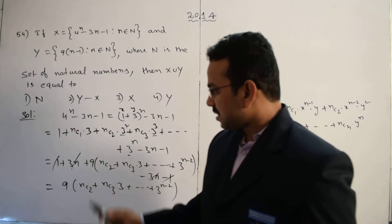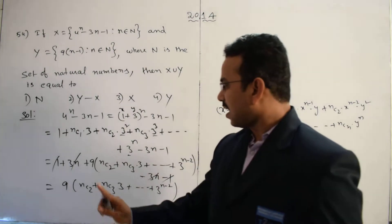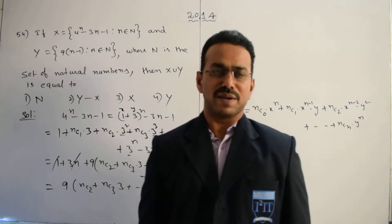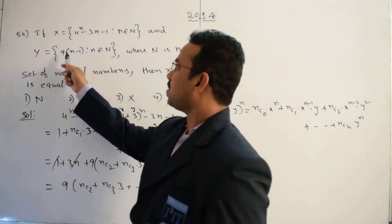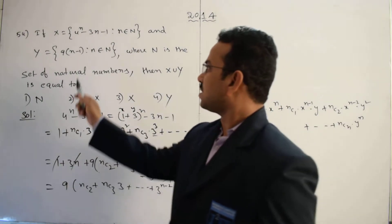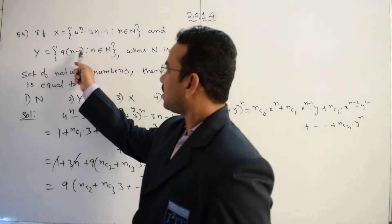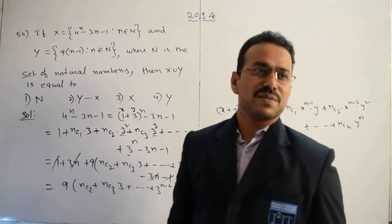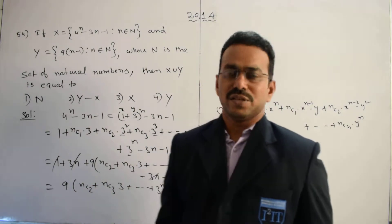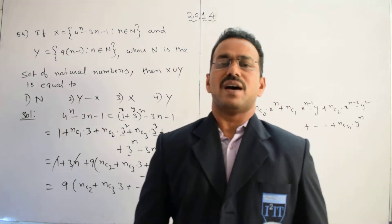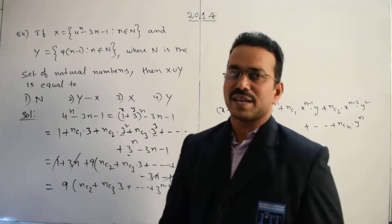Clearly from this we can conclude that the set X contains multiples of 9, but not all multiples of 9. For set Y, putting n=1 gives 0, n=2 gives 9, n=3 gives 18 — so Y produces every multiple of 9 in sequence. Whereas X contains only some multiples of 9. Therefore Y contains all multiples of 9.